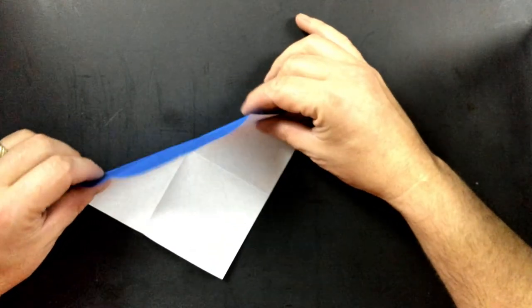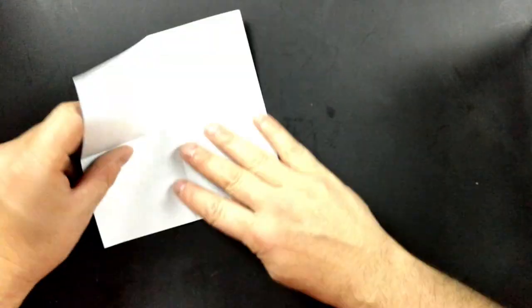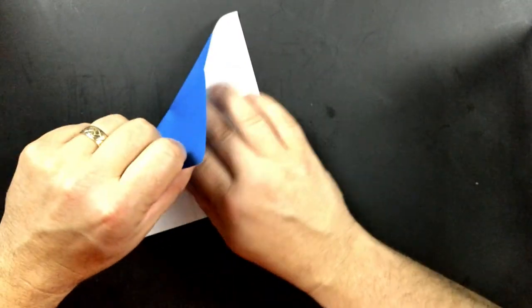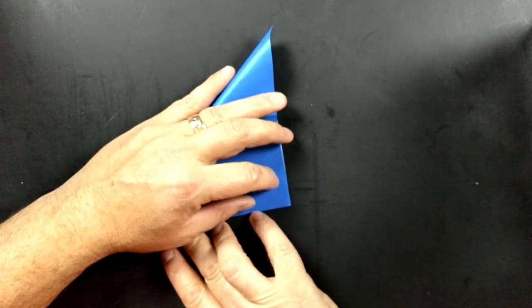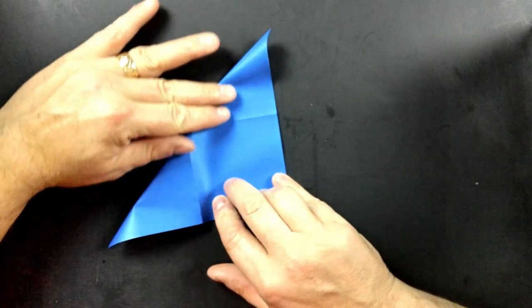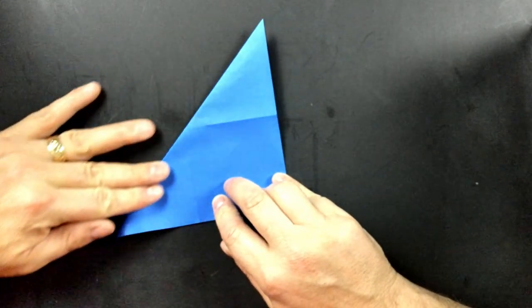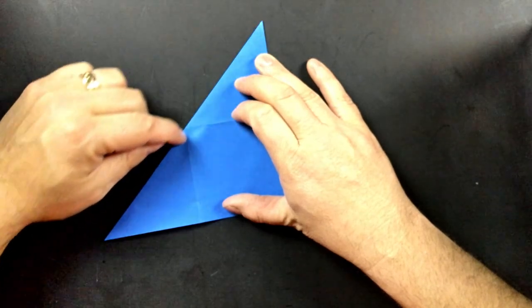I like to help the paper by putting my thumbs in there, helping it roll, match up that corner, then fold. And after you like the fold, go ahead and crease her down.